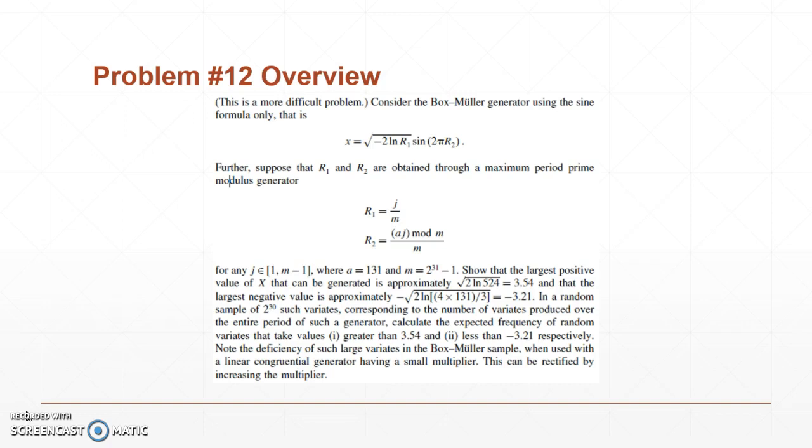Further suppose that r1 and r2 are obtained through a maximum period prime modulus generator. So r1 is j over m, and r2 is a times j mod m over m. For any j in 1 to m minus 1, where a is 131 and m is 2 raised to 31st minus 1.